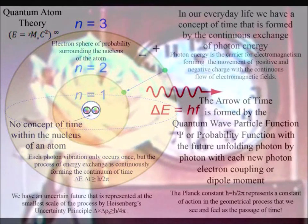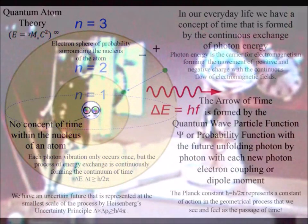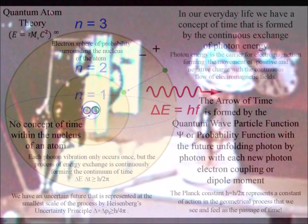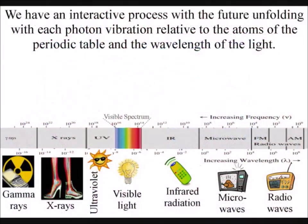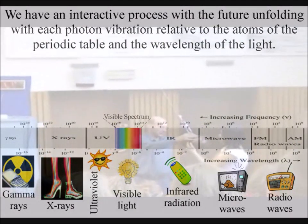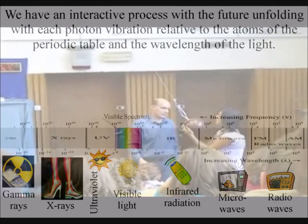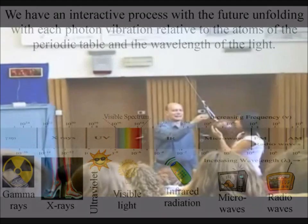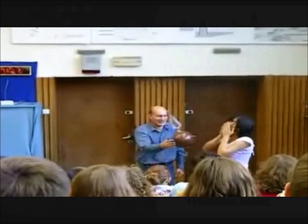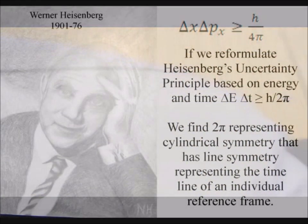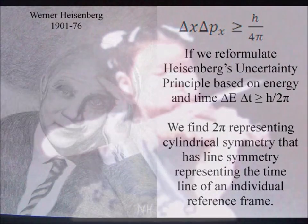This represents an emergent process, with the future unfolding with each photon-electron coupling, or dipole moment. In our everyday life, we measure this process as a period of time, relative to the atoms of the periodic table and the wavelength of the light. Each one of us has an emergent uncertain future that will be relative to our position and the energy and momentum of our actions. The uncertainty of everyday life is represented, at the smallest scale of this process, by Heisenberg's uncertainty principle.